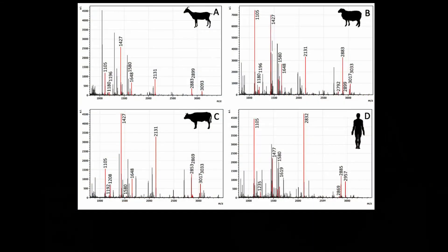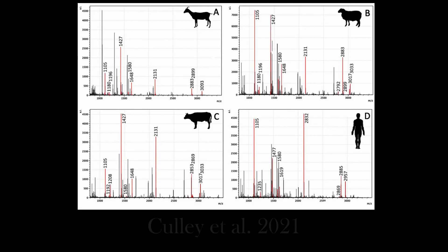So what you end up with looks kind of like a barcode. I'll put a picture up here, and we can then look at particular sites along that graph and match them with the known collagen peptide fingerprints of various animal taxa, various species.